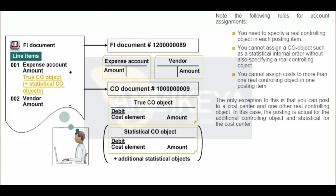You can also specify statistical controlling objects as account assignment objects in addition to real controlling objects. You cannot allocate costs posted to statistical controlling objects to other objects. These account assignments are for information purposes only. You can make statistical assignments during posting to any number of controlling objects.